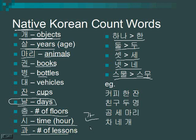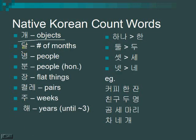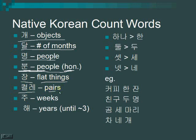과 counts the number of lessons. 달 counts months. 명 counts people. 분 counts people honorifically — people you don't know. Store clerks will often count customers using 분 because it's polite. 장 counts flat things. 켤레 counts pairs. 주 counts weeks. 해 counts years, typically up to about three years. Examples: 커피 한 잔 — one cup of coffee. 친구 두 명 — two friends. 곰 세 마리 — three bears.